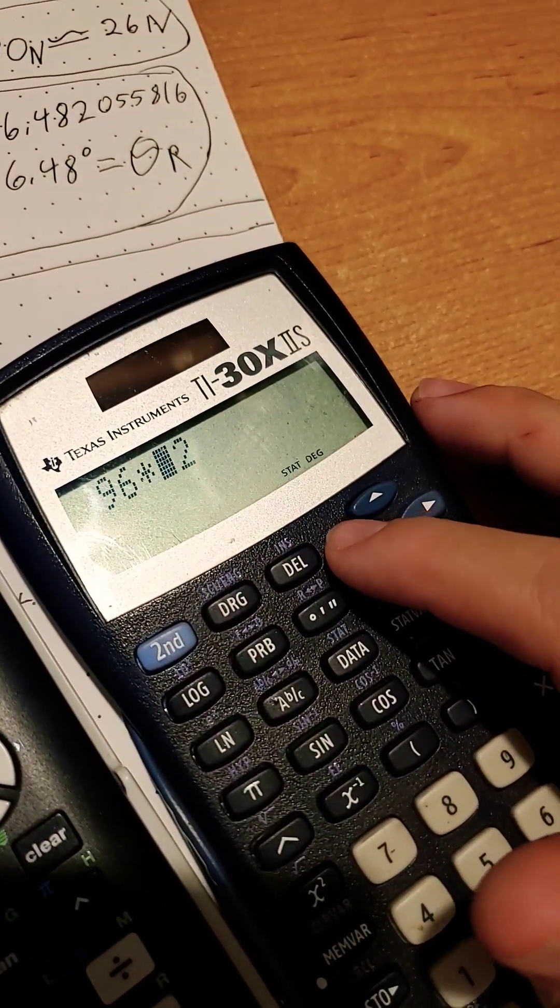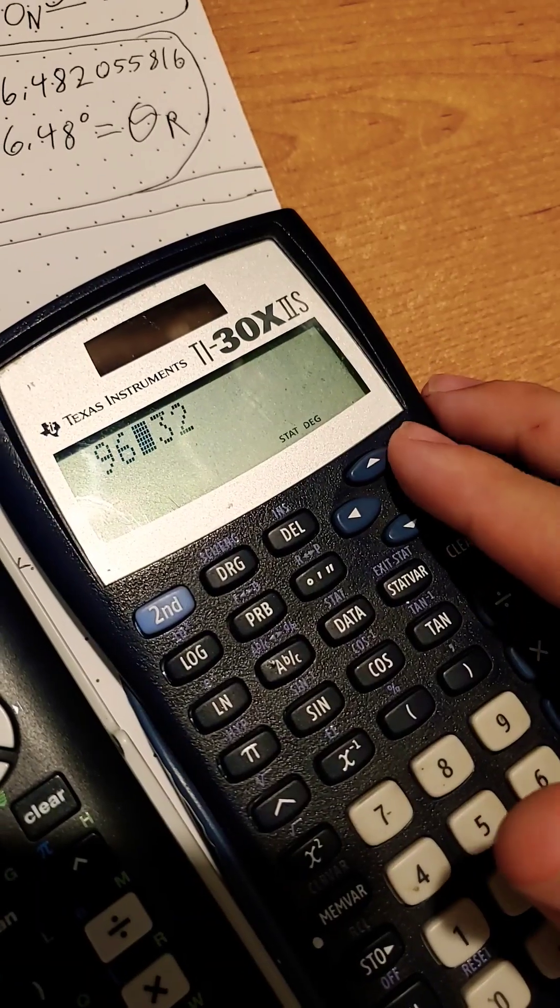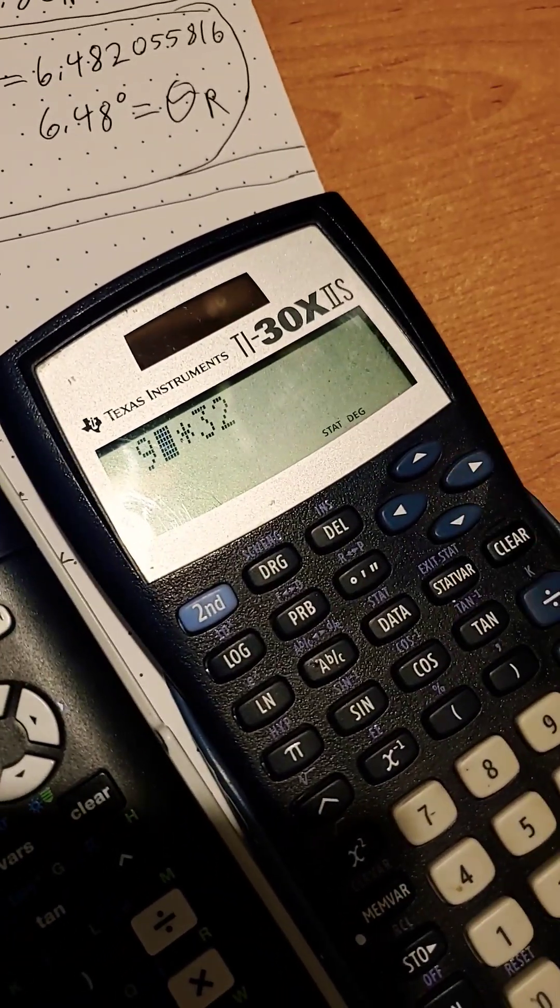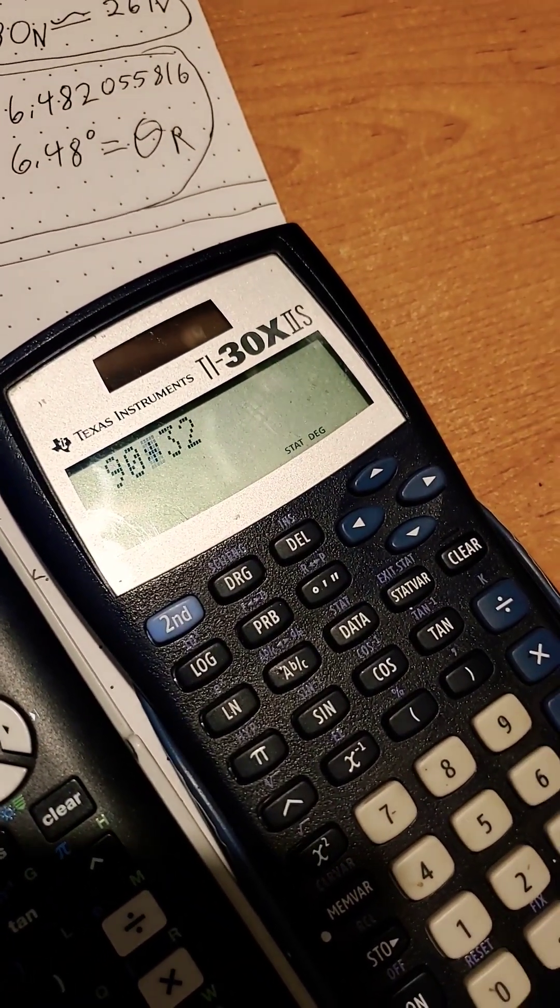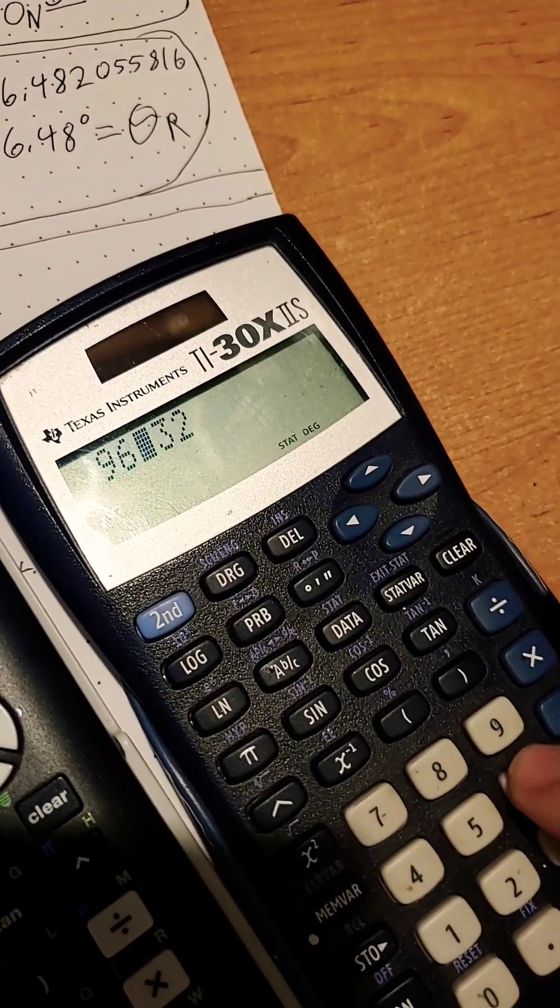Now let's say we wanted to edit this 96 and add in a 0 at the end or something like that. If we were to add it right here, it would just replace the 6, which is no good.